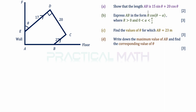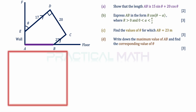In part A, we are told to find the length of AB and show that it is 15 sin theta plus 20 cos theta. AB is the part of the line on the floor. We need to draw multiple right angle triangles in this diagram, finding where theta appears in each. By SOHCAHTOA: tangent is opposite over adjacent, cosine is adjacent over hypotenuse, and sine is opposite over hypotenuse.